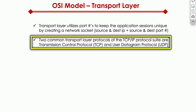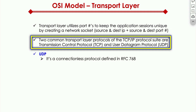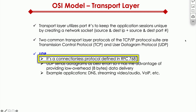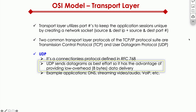Two common transport layer protocols are TCP, or Transmission Control Protocol, and UDP, or User Datagram Protocol. UDP is a connectionless protocol defined in RFC 768. It sends data as best effort, and its biggest advantage is low overhead — only an eight-byte header.